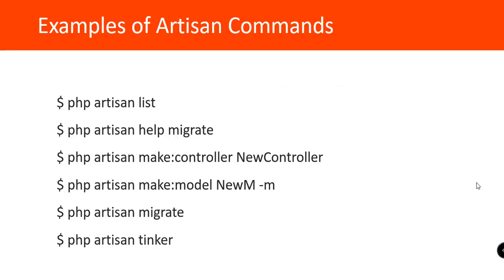Here are examples of Artisan commands: `php artisan list`, `artisan help migrate`, `artisan make:controller` followed by the controller name, `artisan make:model` followed by the model name with the `-m` flag, `php artisan migrate`, and `artisan tinker`. Some of these commands we'll use later in this tutorial series, along with other commands we may need during our development process.